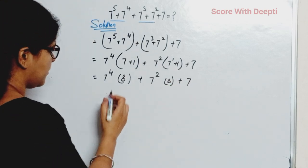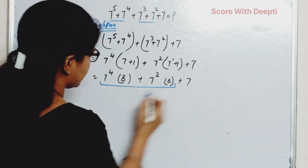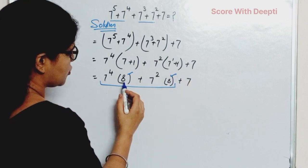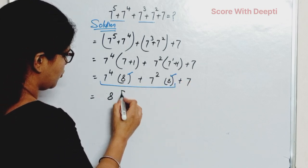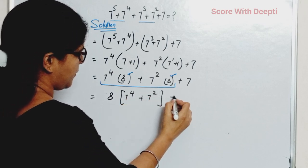Next, again, these are two terms. Here is 8 and here is also 8. So we take 8 as common and write 8 * (7^4 + 7^2 + 7).